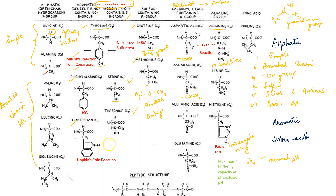Because of the presence of the phenyl group, tyrosine is positive for Millon's reaction and Folin-Ciocalteu reaction. Tryptophan contains the indole ring, which is why its specific reaction is the Hopkins-Cole reaction.